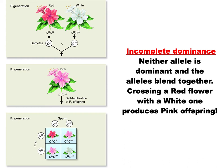If we cross two of those pink babies, one parent is C-R, C-W and so is the other. We spread those alleles out on the Punnett square. Crossing them gives us C-R, C-R — that's a red flower; C-R, C-W — that's a pink one; and we'd also get C-W, C-W — a white one.